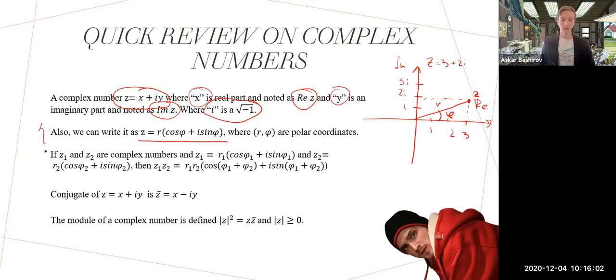There's one really important theorem used a lot in complex analysis for polar coordinates: if we have two numbers z₁ and z₂ and we multiply them, then their lengths will multiply and the arguments will sum up. Very important formula we use a lot.